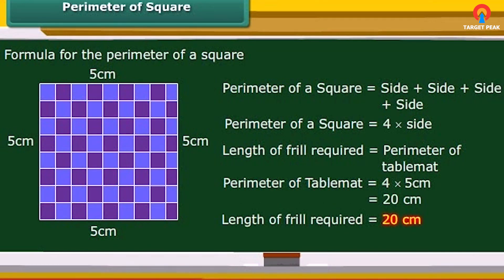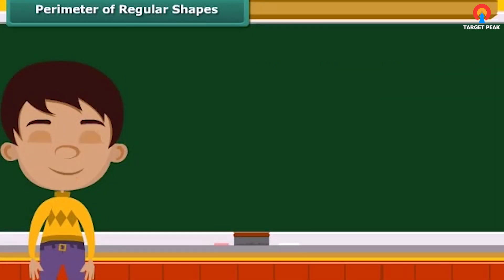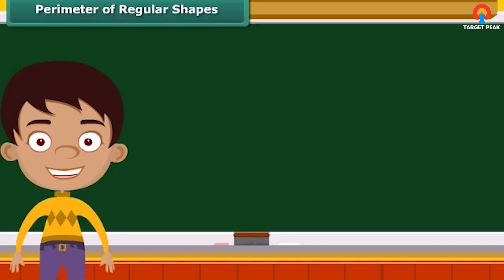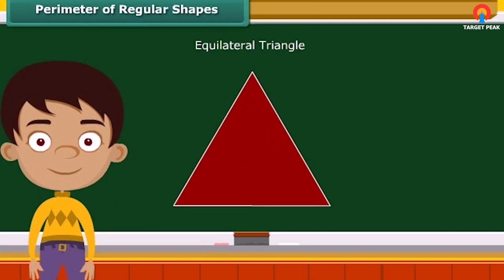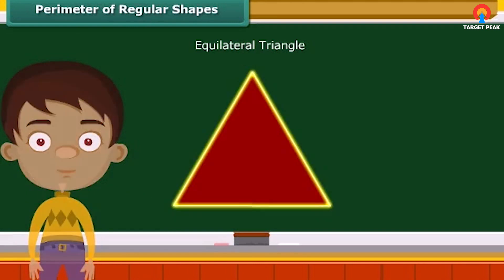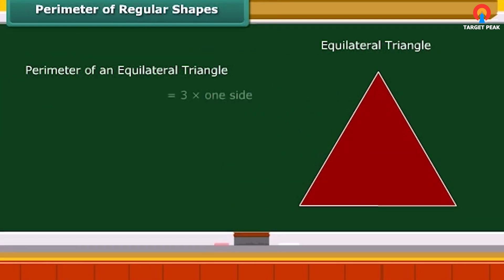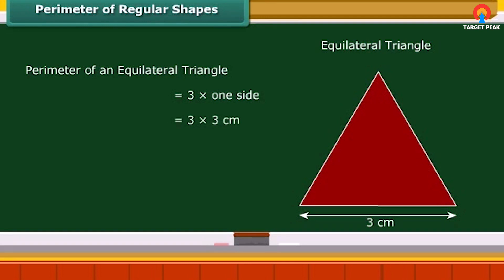Shapes that have all sides of equal length and all angles of equal measure are known as regular shapes. A square is a perfect example of a regular shape. Another regular shape is the equilateral triangle, whose three sides are equal. The perimeter of an equilateral triangle is 3 multiplied by each side. For example, if an equilateral triangle has a side of 3 centimeters, then its perimeter is 3 × 3 = 9 centimeters.